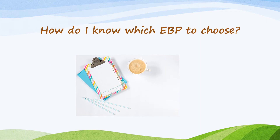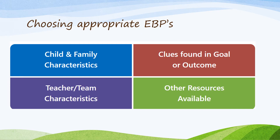In this section, we are going to discuss how to choose evidence-based practices and talk about some resources you can use to do that. Here are four areas to consider — this information comes directly from the Affirm modules, and I will include the link at the end of the PowerPoint. The first area is child and family characteristics: what are the strengths and interests of the student? What are the family's goals and their input? Maybe they're hoping a younger child will learn to write their name, or for a transition-age student, the goal might be to live independently or find employment after high school. These are important things to consider when looking at what evidence-based practices are appropriate.